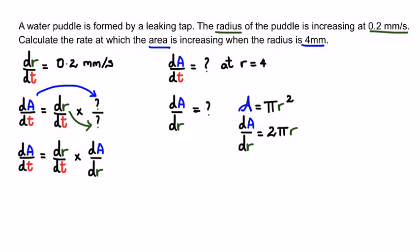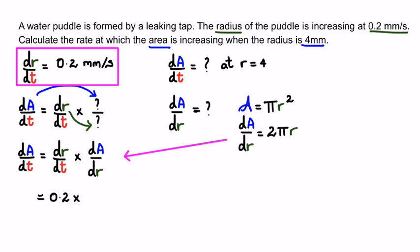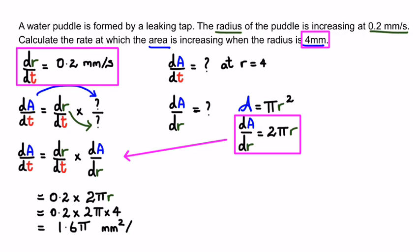Now we have everything we need. da/dt = dr/dt × da/dr = 0.2 × 2πr. The question asks for the rate when the radius is 4 millimeters, so we replace r with 4. When we simplify, we get 1.6π millimeters squared per second.